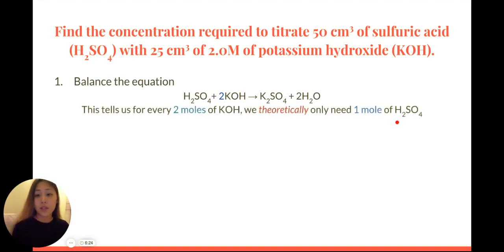Now this tells us that for every two moles of potassium hydroxide, we theoretically only need one mole of sulfuric acid. So you see here, you have two moles of potassium hydroxide after this equation is balanced, and you only need one mole of sulfuric acid.